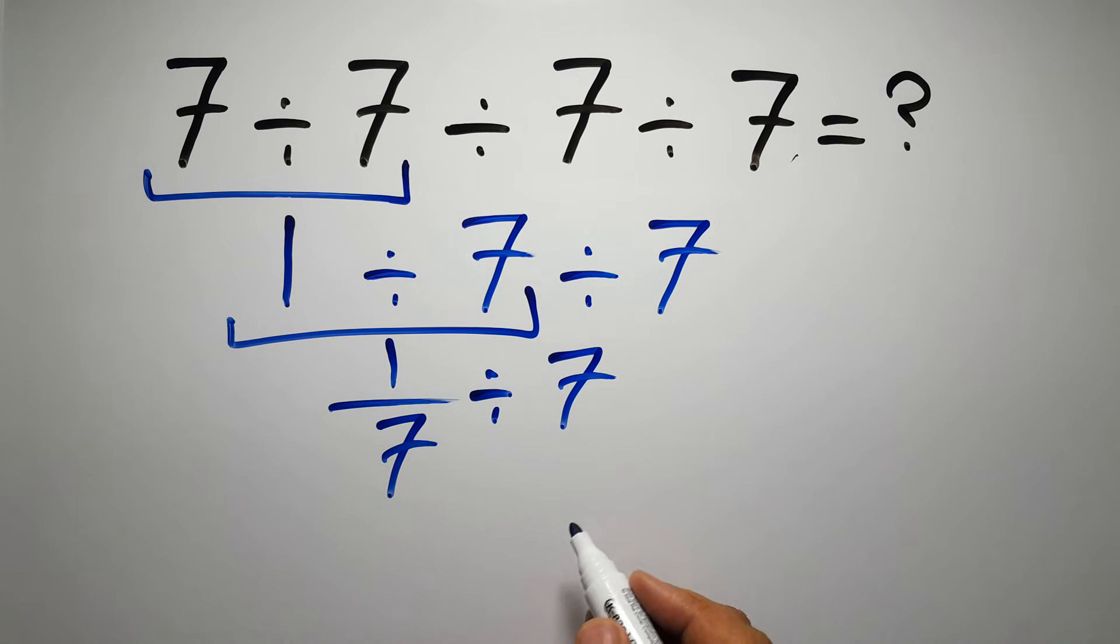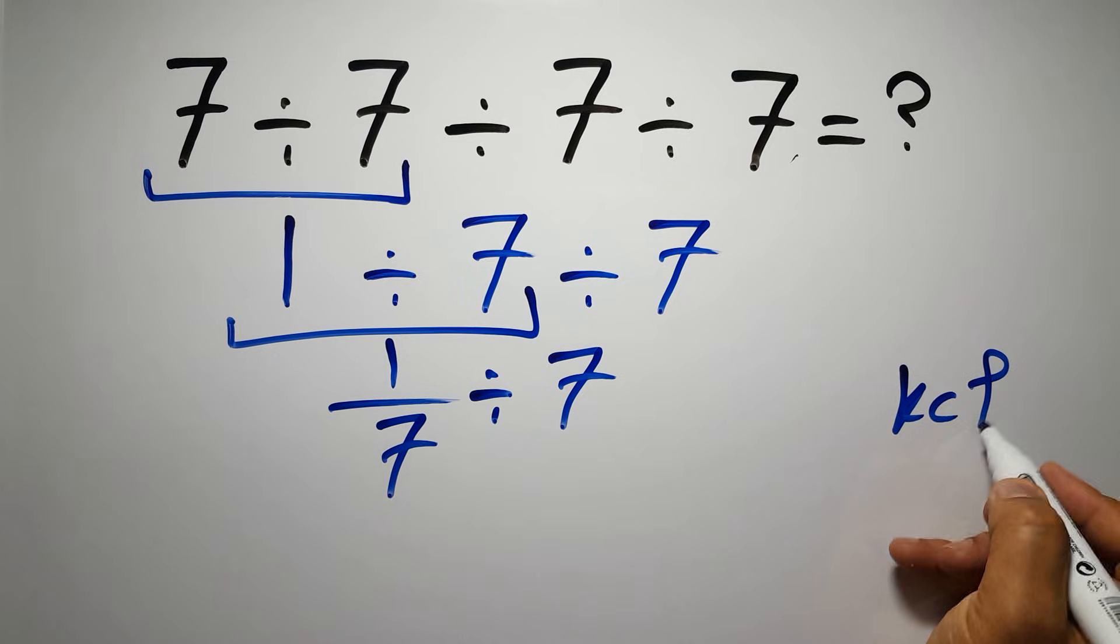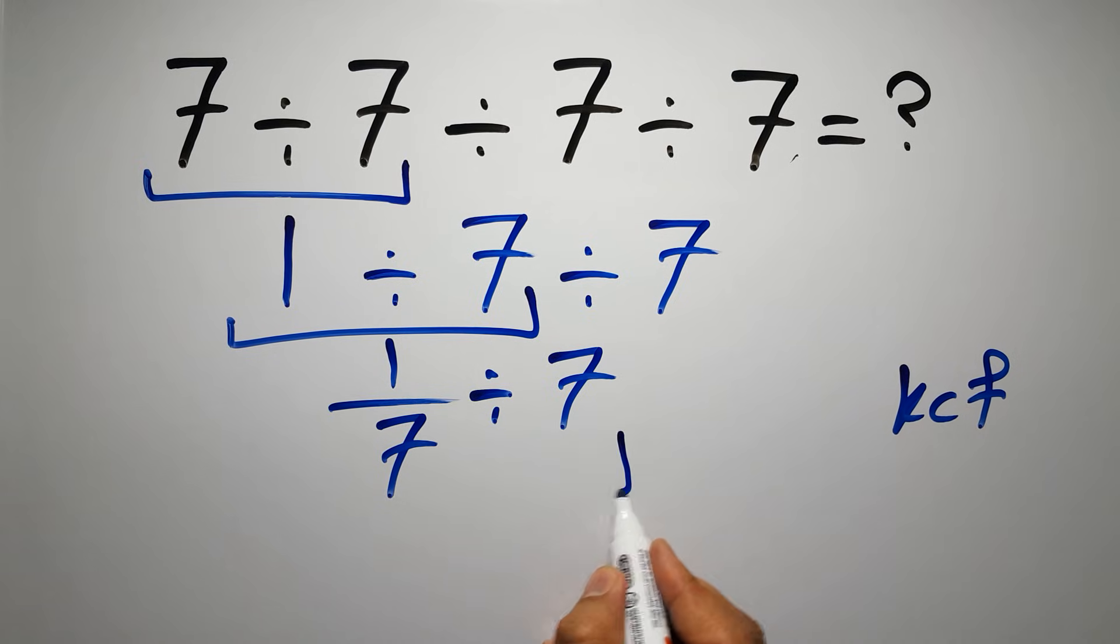Now, according to the KCF rule, K stands for keep, C stands for change, and F stands for flip. We can write: keep the first fraction, change division to multiplication, and flip the second fraction.